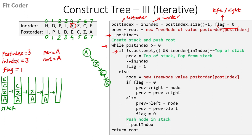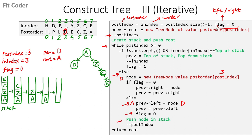In the next iteration, we check if the stack is empty — it is, so we come in the else part. We create a new tree node with the third index of the postorder traversal, which is D. Flag is 1, so we come in the else part: left of A (previous) becomes D. Previous becomes equal to left of previous, which is D, and flag becomes 0. We push D in the stack and decrement postindex to 2.